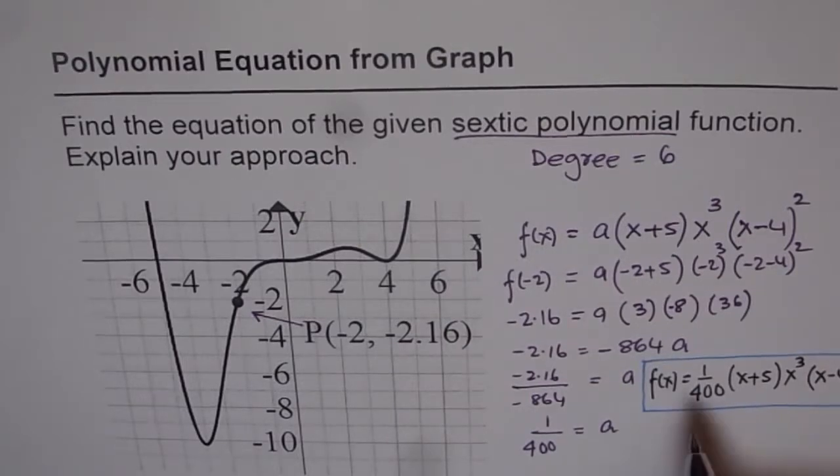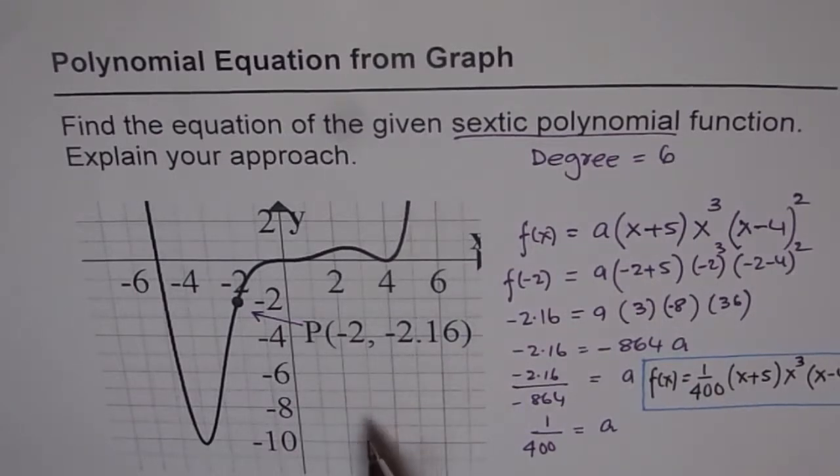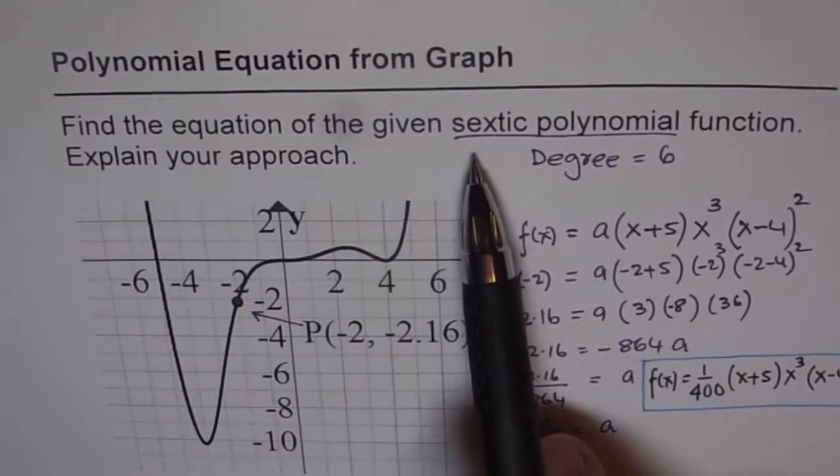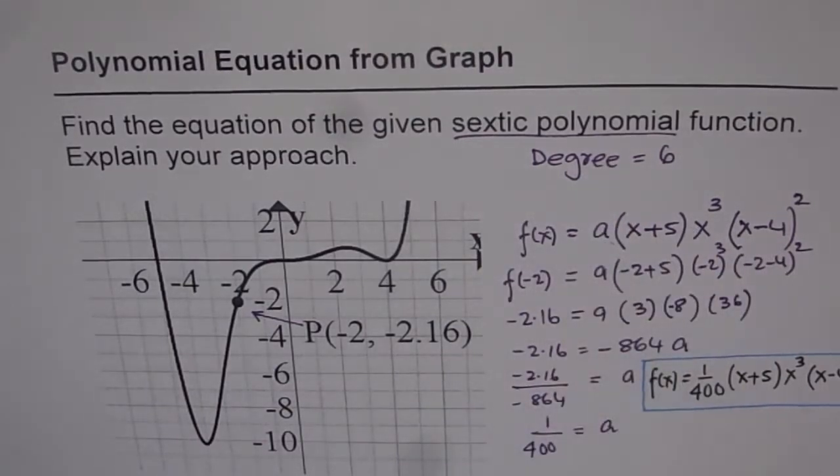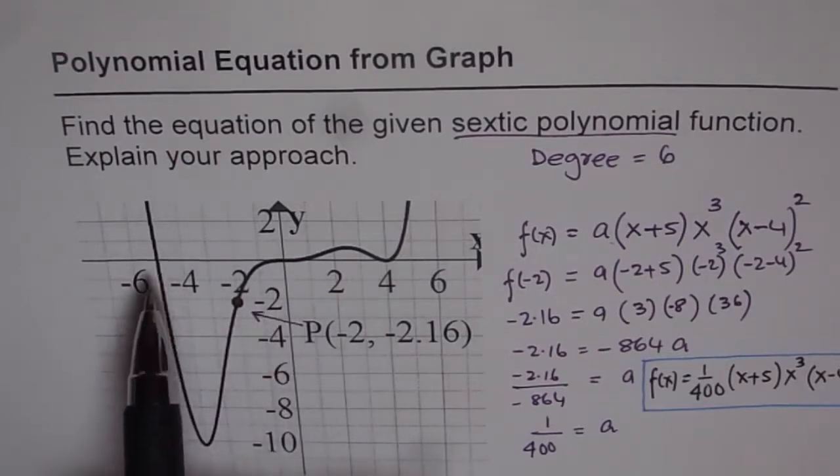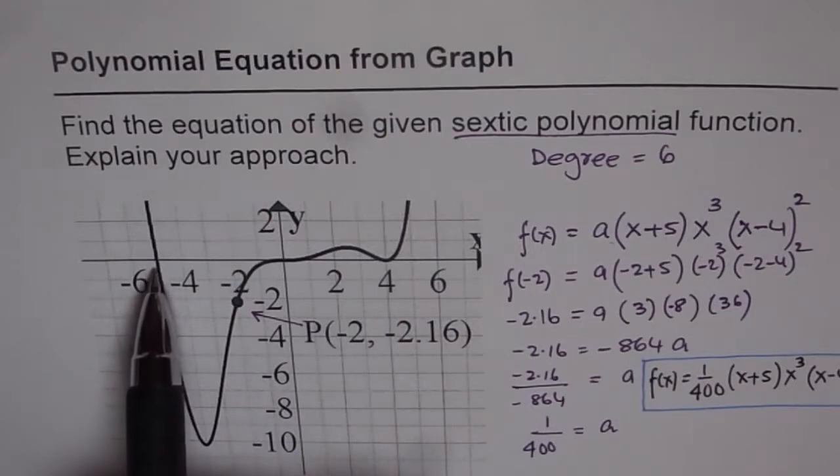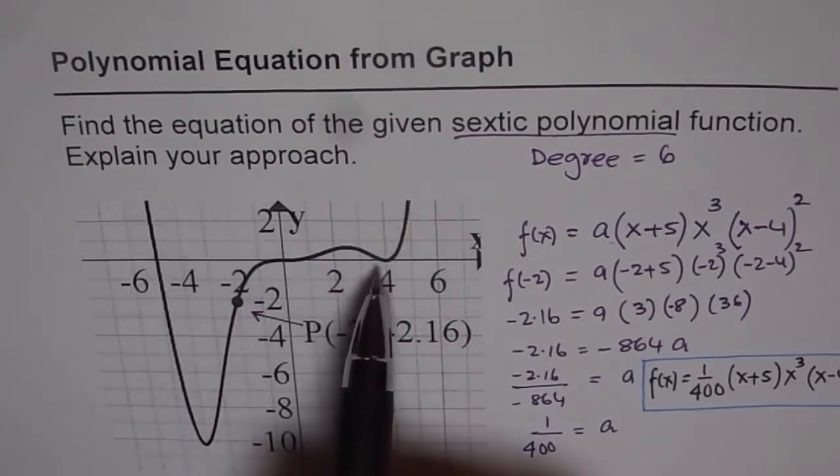So I hope now you understand how to write down equation from a given graph. The idea is once see what is the degree of the polynomial then you should know all the factors should add up to an exponent of 6 since that is the degree. Go one by one through the x intercepts and check their order of zeros. So this is order 1 linear zero.